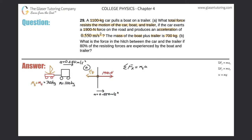Plugging into our formula: the sum of forces in the x-direction equals the total mass times the acceleration in the x-direction. So we have 1900 (positive, pointing right) minus F_friction (pointing left) equals the total mass — 1100 kilograms for the car plus 700 kilograms for the boat and trailer — multiplied by 0.550.